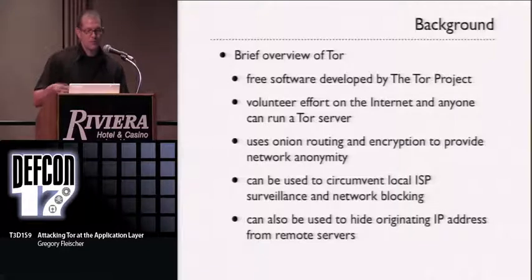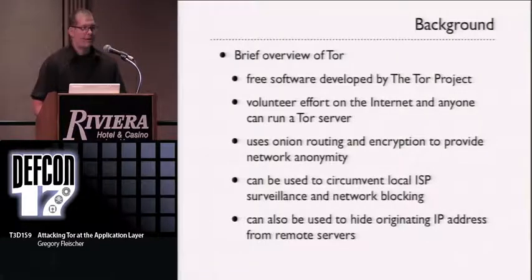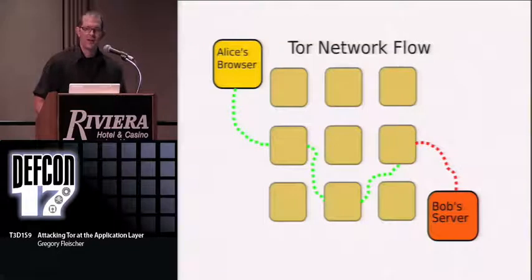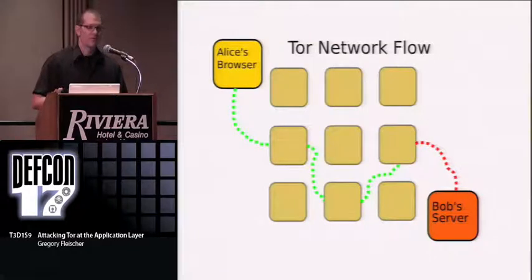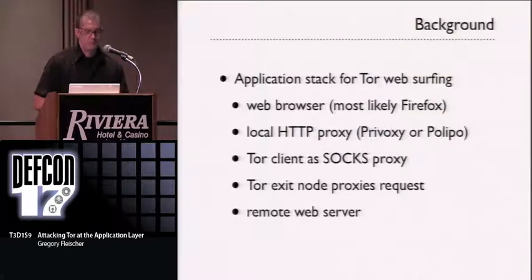Tor is used to circumvent local ISP surveillance and blocking, as well as hiding your original IP address. Here's a traditional view of what the Tor network looks like: you have Alice's browser, a set of three nodes that you transit through, and getting to Bob's server.